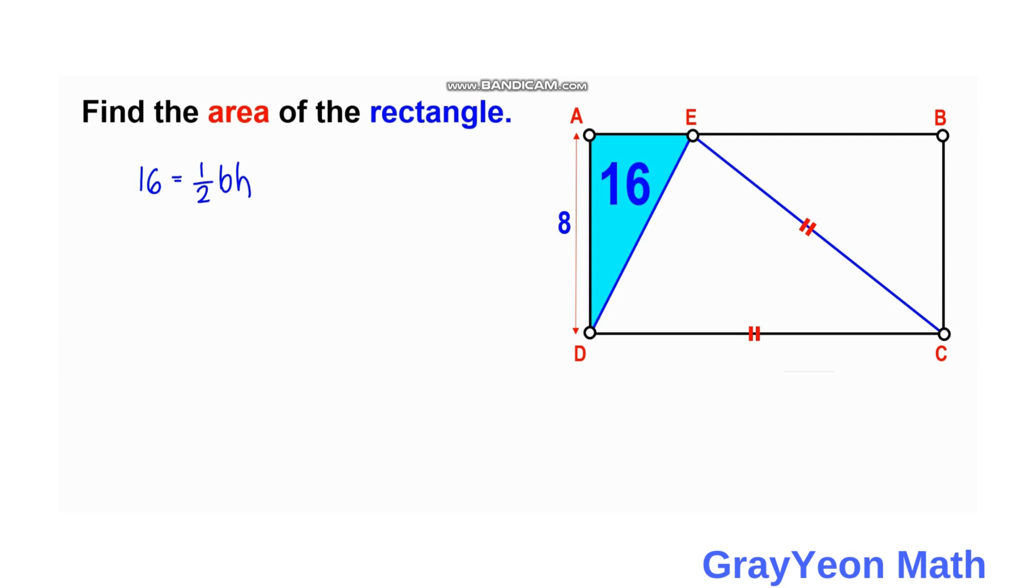So 16 equals one-half times AE times the height which is AD. AD is given as 8, so 16 equals one-half times AE times 8.